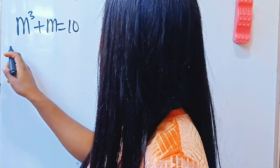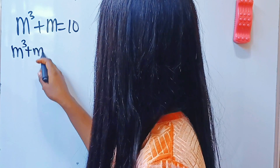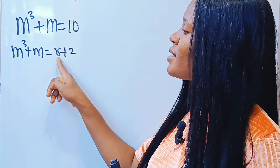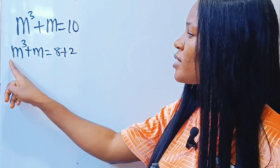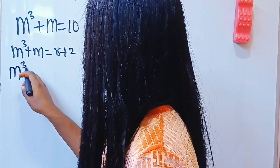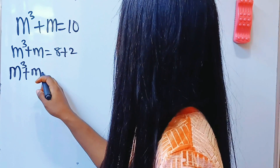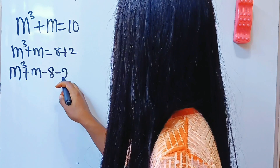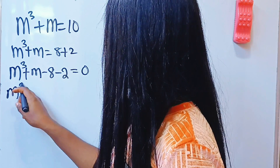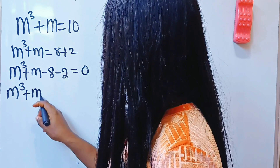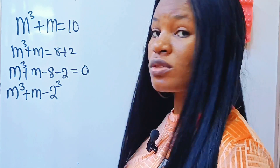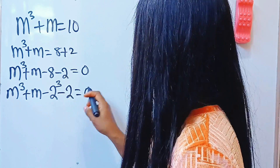Now let's get straight to the point. We have m to the power of 3 plus m, which is equal to 8 plus 2. I'm doing that because 8 can be written as 2 to the power of 3, just like we have m to the power of 3 here. So I'll write m to the power of 3 plus m, then bring everything to one side: minus 8 minus 2 equals 0. Now we have m to the power of 3 plus m minus 2 to the power of 3, minus 2, equal to 0.